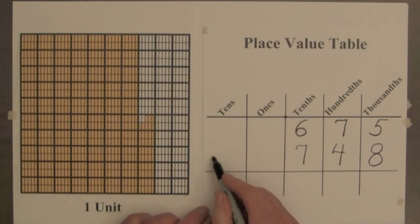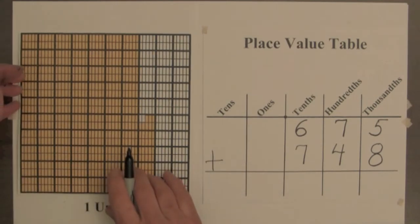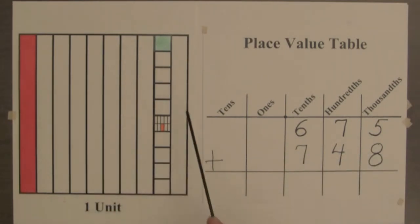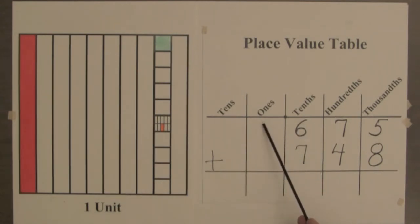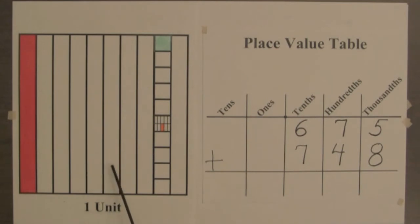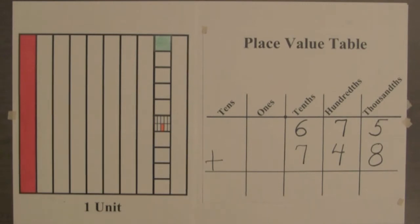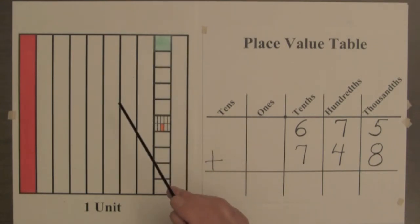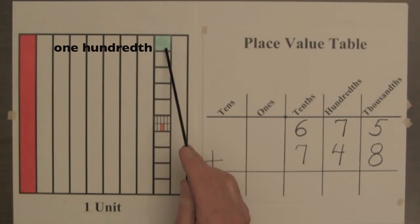Before adding these decimals, we will use this large unit square to review the relationships between tenths, hundredths, and thousandths. This large square represents one unit, and we will record the number of units in the ones column. This red shaded column is one of ten equal parts, so one of these parts is called one-tenth. The small green shaded square is one of a hundred equal parts, so we call one of these one-hundredth.